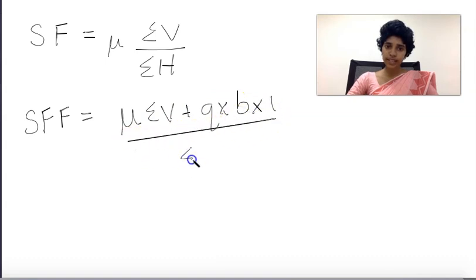It equals mu times sigma V plus 2 times b times tau, divided by sigma H. Mu is the coefficient of friction, sigma V is the sum of vertical forces. The value should be greater than or equal to 1 for safety.